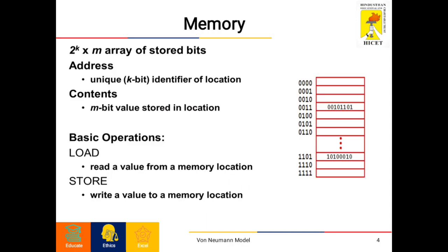Memory can store a 2^k × m array of stored bits. Addresses are unique k-bit identifier locations, and contents are the m-bit value stored in the location. The basic operations performed by memory are load and store. In load, we read a value from a memory location, and in store, we write a value to a memory location.